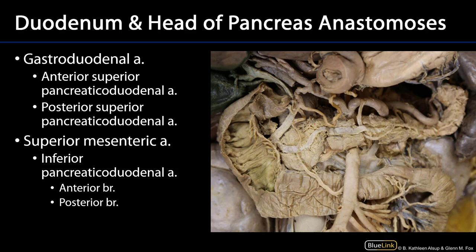Let's take a look at some of the vessels supplying the duodenum and the head of the pancreas with blood. Starting at the celiac trunk, coming off along this way we have the common hepatic artery. That common hepatic artery has two terminal branches: the hepatic artery proper and the gastroduodenal artery. It's the gastroduodenal artery that's going to be important here. Coming off of it is a branch called the anterior superior pancreaticoduodenal artery. There's also a posterior superior pancreaticoduodenal artery that we'll see on the next slide.